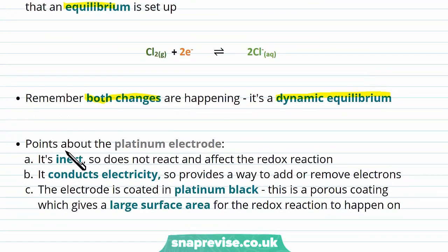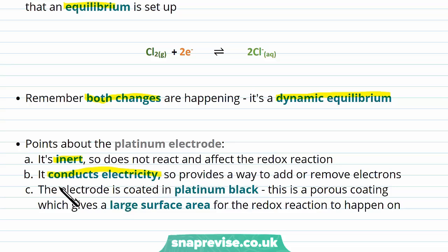There are some points to note about the platinum electrode. The reason we use platinum is because it's inert, meaning it doesn't react, so it won't affect the redox reaction. It also conducts electricity, providing a way to add or remove electrons from the half cell. The electrode is coated at the bottom in platinum black, which is a porous coating — it has a foamy structure that gives a large surface area so the redox reaction has lots of surface to take place on.